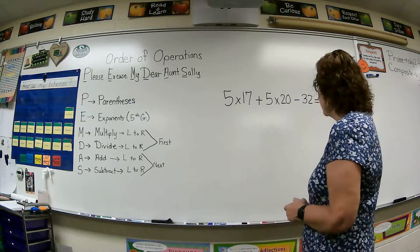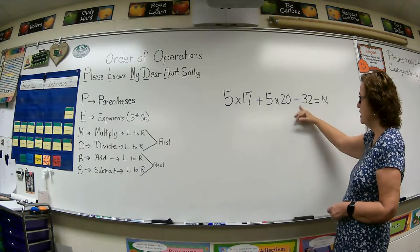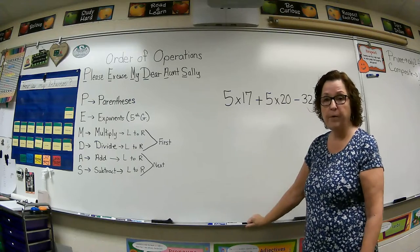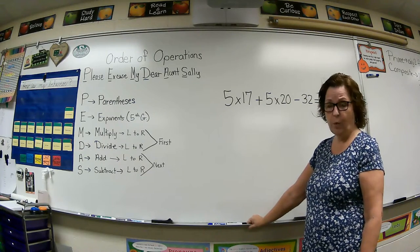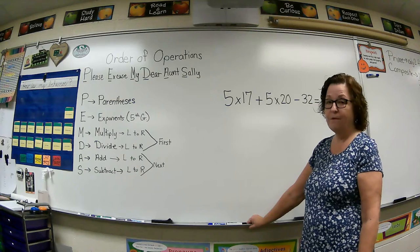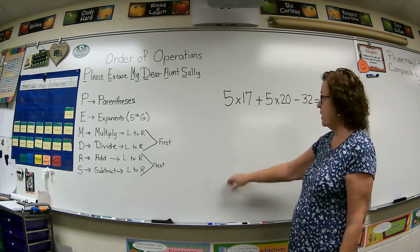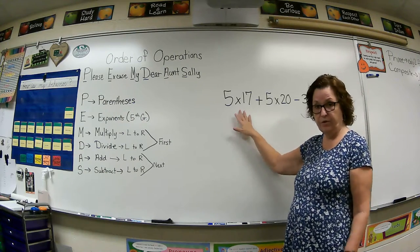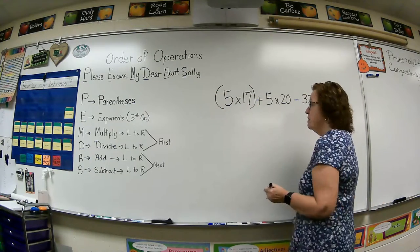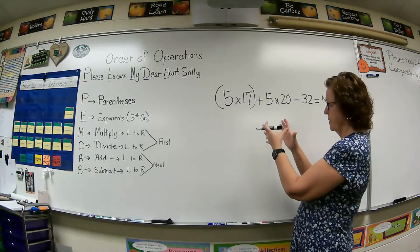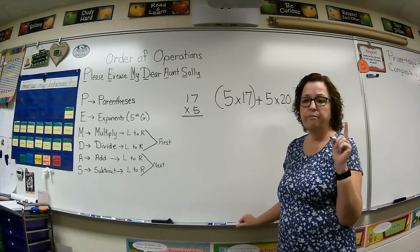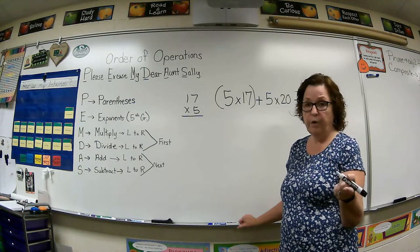I have an equation up here. I have 5 times 17 plus 5 times 20 minus 32 equals N. We're going to look at this equation using our order of operations. So I don't have anything in parentheses. So I have to go to the next step, which is exponents, which we don't have any of those because you won't see those until fifth grade. And then let's go to multiply or divide. Left to right. Well, left to right, I come up with 5 times 17 first of all. So I'm going to put parentheses around 5 times 17 because I do want to do this first. 5 times 17. So you may not be able to do that in your head. So go over to the side and write it vertically. And we can use what we've learned with multiplying with partial products or multiplying with regrouping, the standard algorithm.